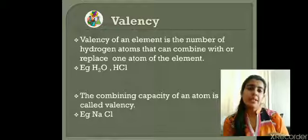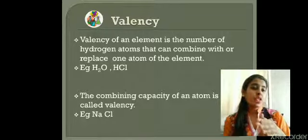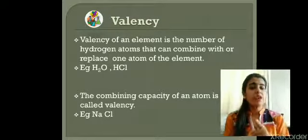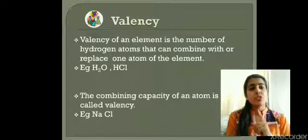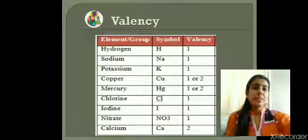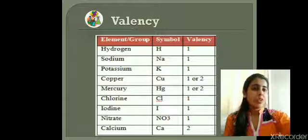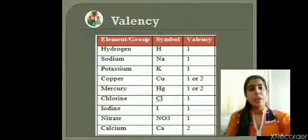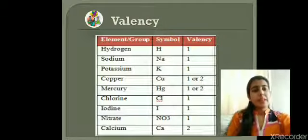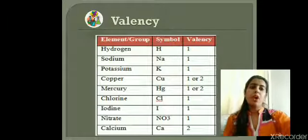In sodium chloride, NaCl, sodium is combining with one atom of chlorine and chlorine is combining with one atom of sodium, so both have a valency of one. A table shows symbols and valencies: hydrogen is one, sodium one, potassium one. Copper can show valencies of one or two depending on the compound formed. Mercury can also show one or two. Chlorine, iodine, and nitrate have a valency of one. Calcium has a valency of two.